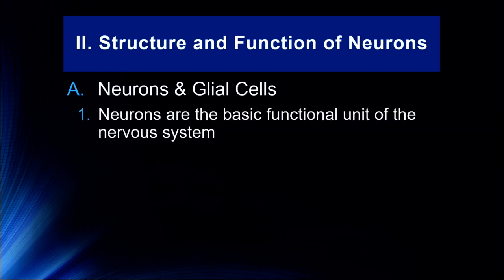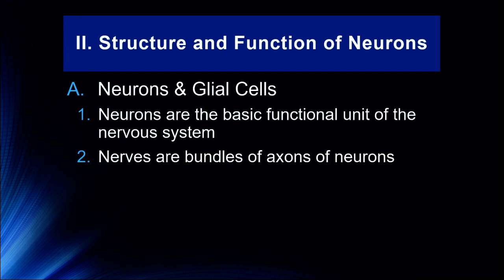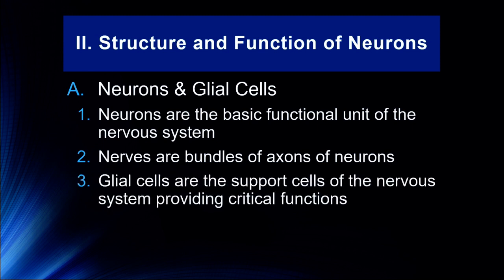Neurons are the basic functional units of the nervous system. Nerves are bundles of axons of neurons. So when we talk about a cranial nerve, a facial nerve, or optic nerve, it's a bundle of axons of many neurons.